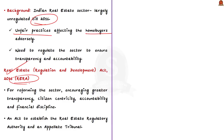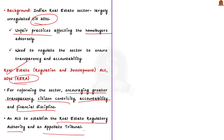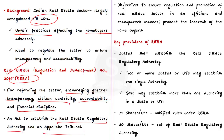RERA marked the beginning of a new era in the Indian real estate sector. It was a step towards reforming the sector, encouraging greater transparency, citizen-centricity, accountability, and financial discipline. This act also established the Real Estate Regulatory Authority and an appellate tribunal called the Real Estate Appellate Tribunal. The core objective of this act is to ensure regulation and promotion of the real estate sector in an efficient and transparent manner, and to protect the interest of home buyers.